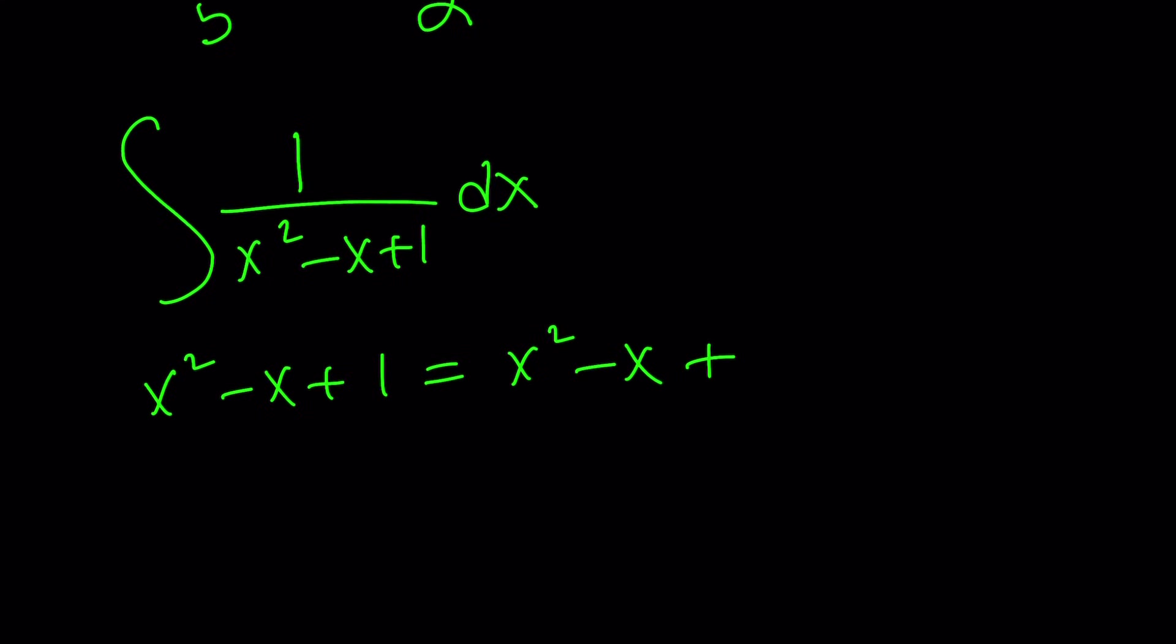Well, never mind. You have to cut in half first. What's half of negative one? Negative one half, square it one fourth. So I need one fourth, but I have one. So I need to add three fourths. You know what that means? It means we completed the square and this is x minus one half quantity squared plus three fourths.